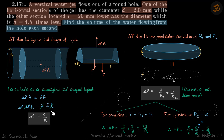Since the liquid is at rest, we do the force balance: ΔP × A = 2F. Since F = S × L, this gives ΔP = S/r. You may recall that for a spherical surface ΔP = 2S/r, but for a cylindrical surface it is only S/r.